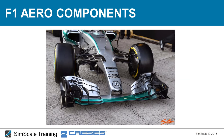A really important concept is the Y250 vortex. This strong vortex is created at the transition point between the mid-wing and the outer wing — called Y250 because it's located 250 millimeters from the center of the car in the y-direction. The large discontinuity in the wing geometry creates a powerful vortex that travels under the front suspension system, guided by the turning vane, to push the turbulent front tire wake outboard.